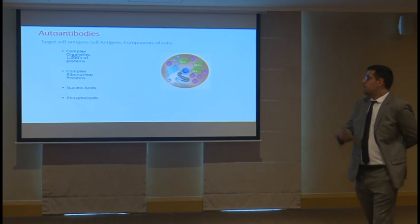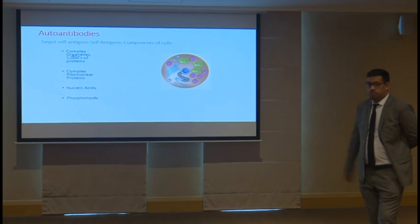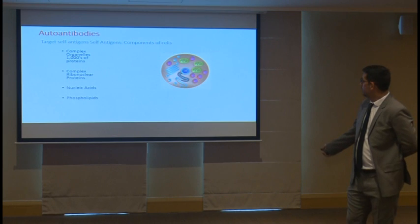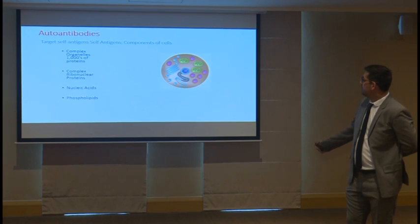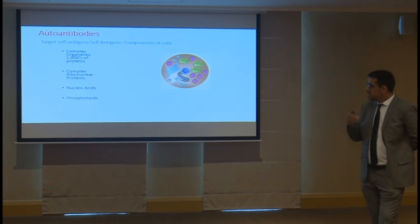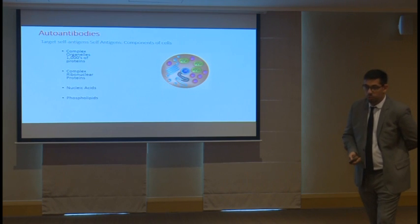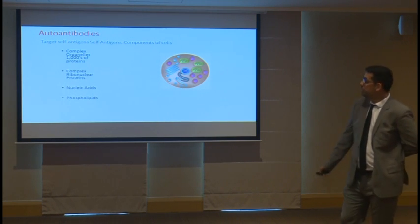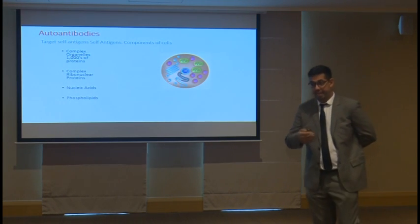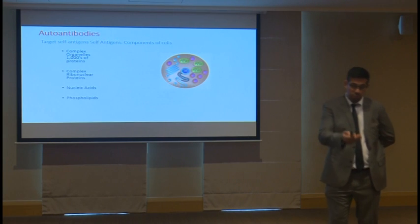Let's talk about antinuclear antibodies. We want to know if there is an antibody inside the nucleus. So what do we do? We do ANA screening. That's mostly what you order first, and then we proceed from there.